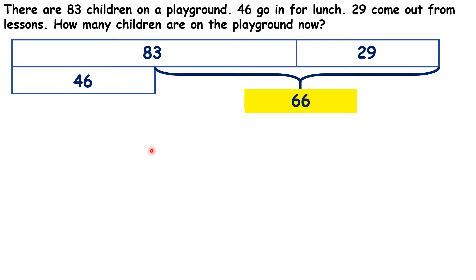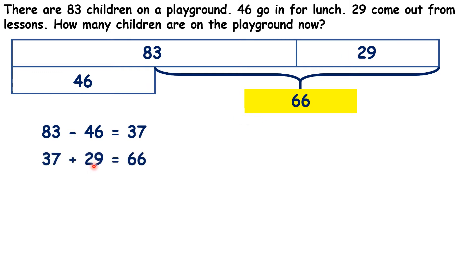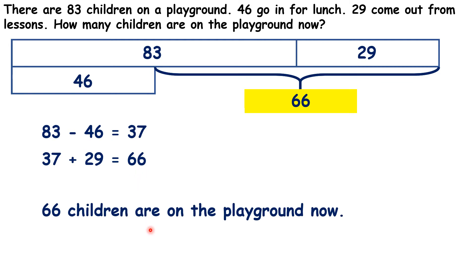But there is a different method we could have used to work this out. We could have started with the 83 children who were on the playground, and then subtracted the 46 who went in for lunch to get 37. So there were 37 children on the playground, but then 29 came out from lessons. So if we add 29 to 37, we get 66. So we know that 66 children are on the playground now.